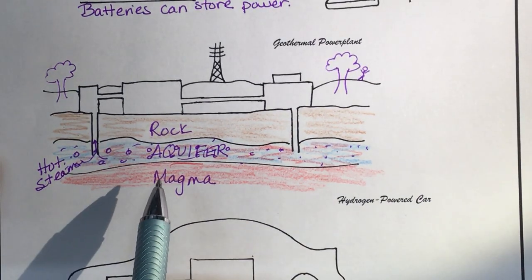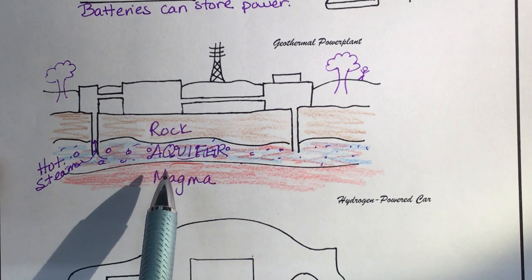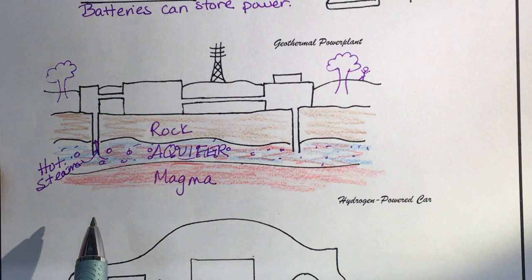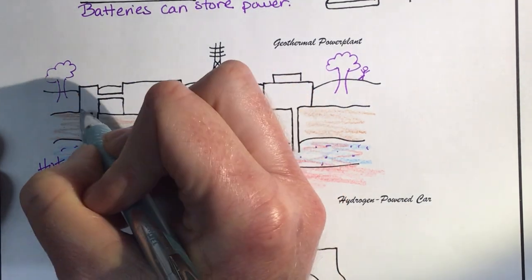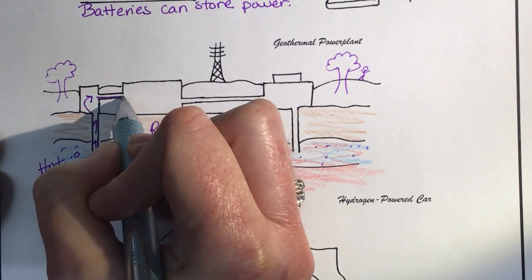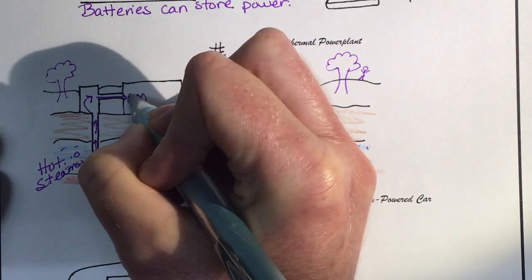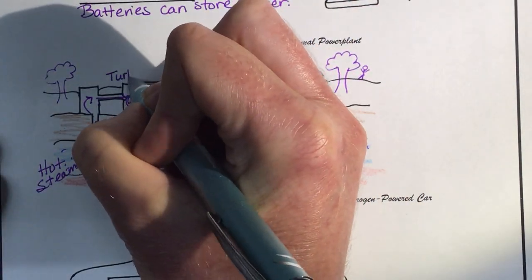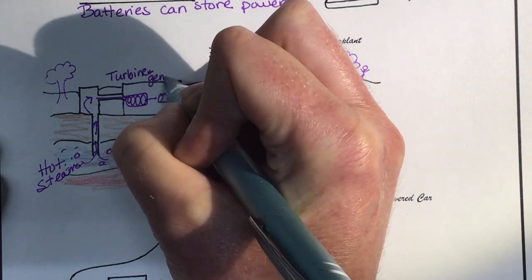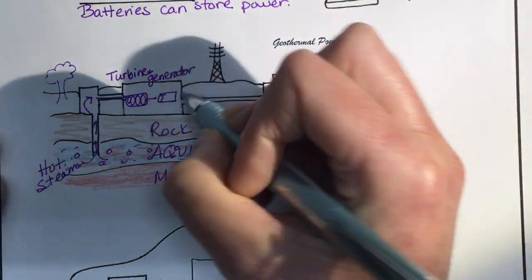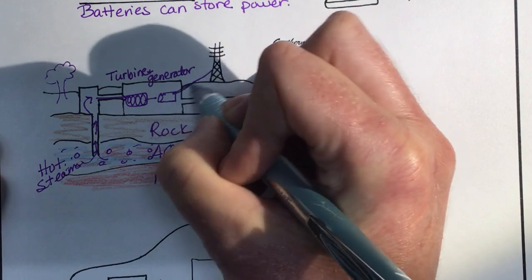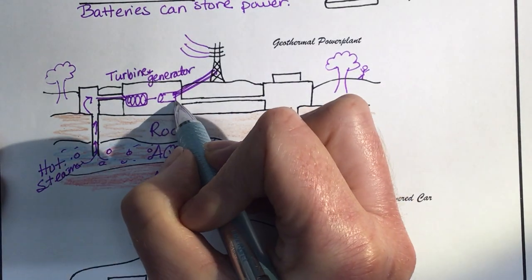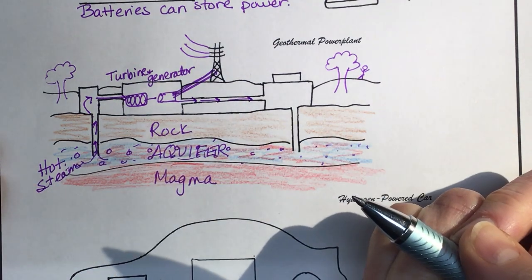This can't be used everywhere because this doesn't happen everywhere. California has several of these in the mountain regions. Iceland leads the world in this. So the hot water comes up and in here you have your turbine that spins. Steam spins turbine which is connected to a generator, and then the generator sends power to the power lines which go to people's homes. Iceland does pretty much all its electricity this way.